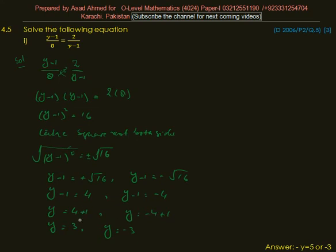Actually, it is plus 1. So it becomes y is equal to 5. One value is y is equal to 5, another is y is equal to minus 3.